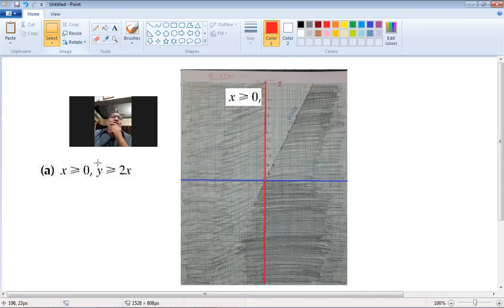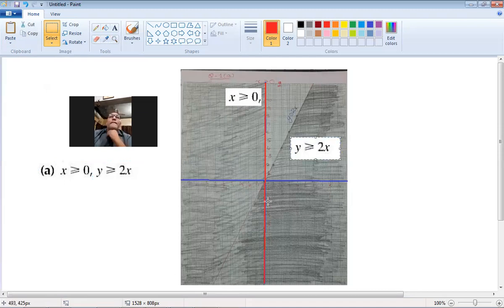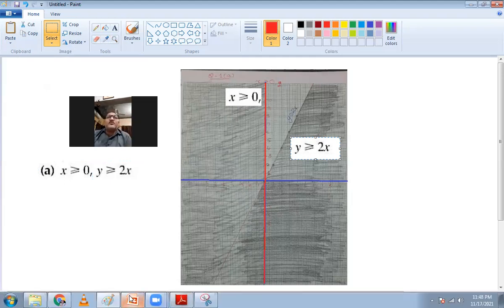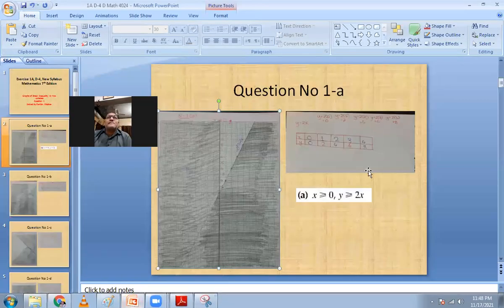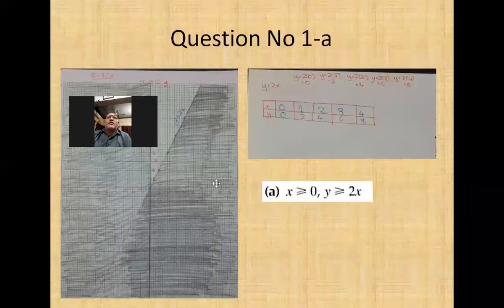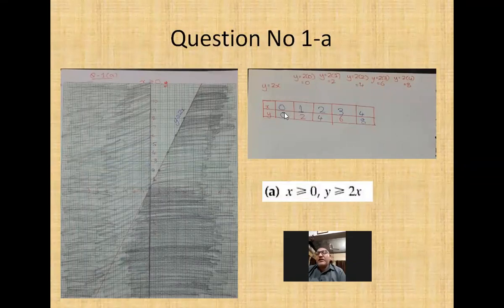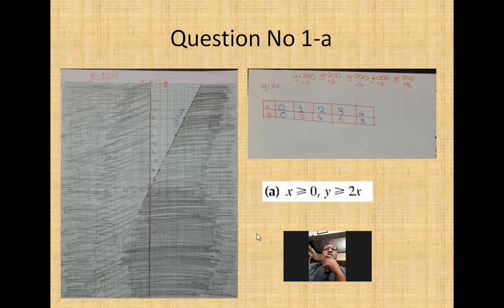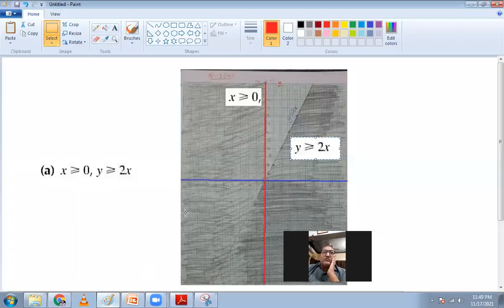The next line is y = 2x. I made a table: substituting x = 0, 1, 2, 3, 4, I calculated the y values, giving coordinates (0,0), (1,2), (2,4), (3,6), and (4,8). I then plotted and joined these points to draw the graph of y = 2x.